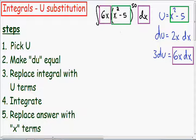So that is why I picked my u, which is in green, to be x squared minus 5. Because the derivative of u, which is in purple, can be made equal to the rest of the integral.